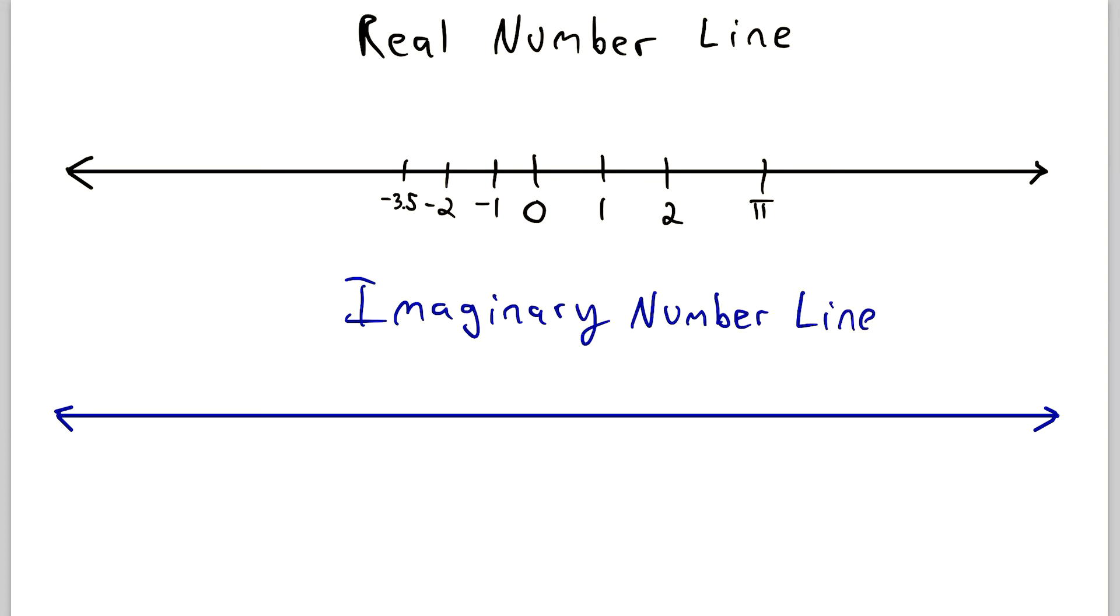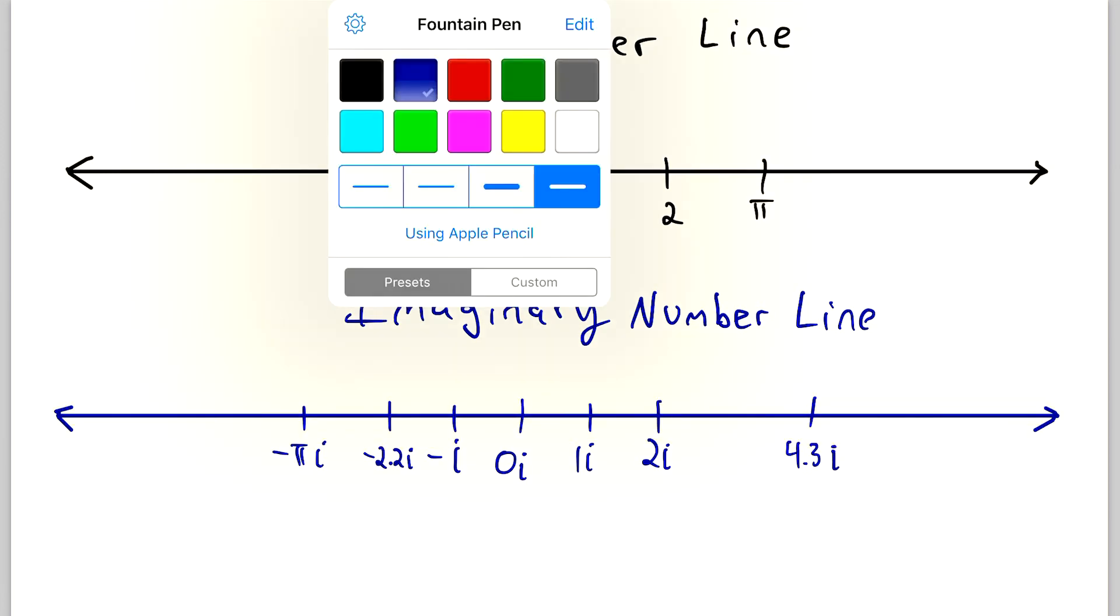In the same way, we have an imaginary number line. So let me draw that here with the arrows on either side, and this is the imaginary number line. Now the imaginary number line is just like the real number line, but now every real number is being multiplied by i. So we've got zero, which is the same as 0i, and then of course we have stuff like 1i, 2i, say 4.3i, and then of course in the negative direction, you've got stuff like -i, stuff like -2.2i, -πi, all that good stuff. So it's the same as the real numbers, except every number now is being multiplied by the imaginary unit. And I only bring this imaginary number line up because it will be useful to be familiar with it once we start talking about complex numbers.